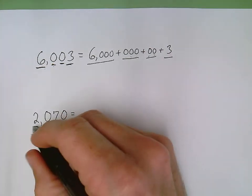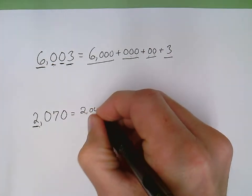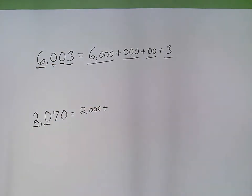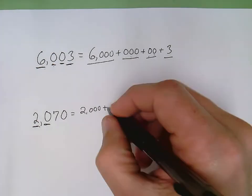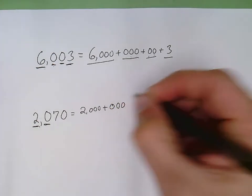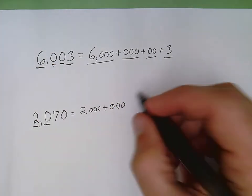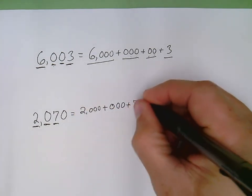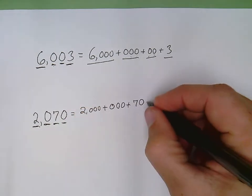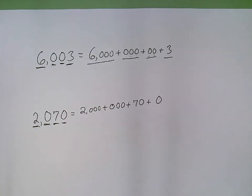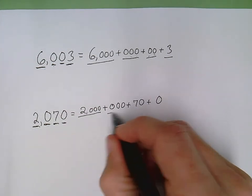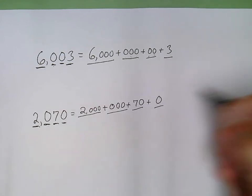Same thing down here with this one. I write down the place value of the two — it's a two in the thousands place — plus a zero in the hundreds. Once again, that is worth nothing, but I want to put down three zeros to show that that is a zero in the hundreds place, plus a seven in the tens place worth 70, and plus a zero in the ones place. So I keep my pattern: four digits, three digits, two digits, and one digit.